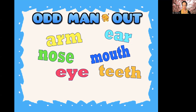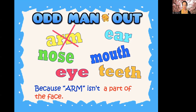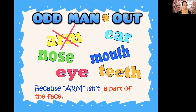Which one is the odd man out here? We have: arm, nose, eye, ear, mouth, and teeth. Which one is the odd man out? Arm is the odd man out. But why? Because arm isn't a part of the face. We don't want our arms sticking out of our face, right?